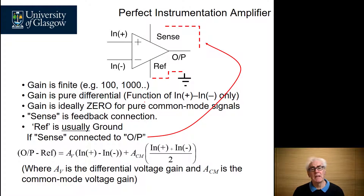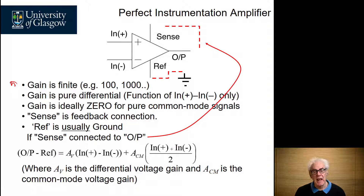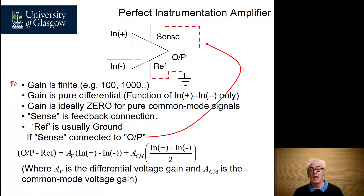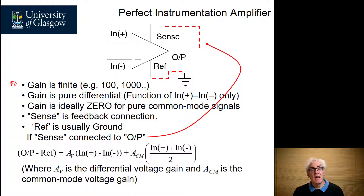And we call this component an instrumentation amplifier. So let's look a little at a perfect instrumentation amplifier. The first thing is it usually has finite gain, often 100, 200, or 1000 times. And this gain is set very accurately on the instrumentation amplifier by resistors built into it. It is purely differential gain. In other words, the output voltage is very close to just a function of the voltages appearing at the two inputs. And ideally, this gain is zero for common mode signals.